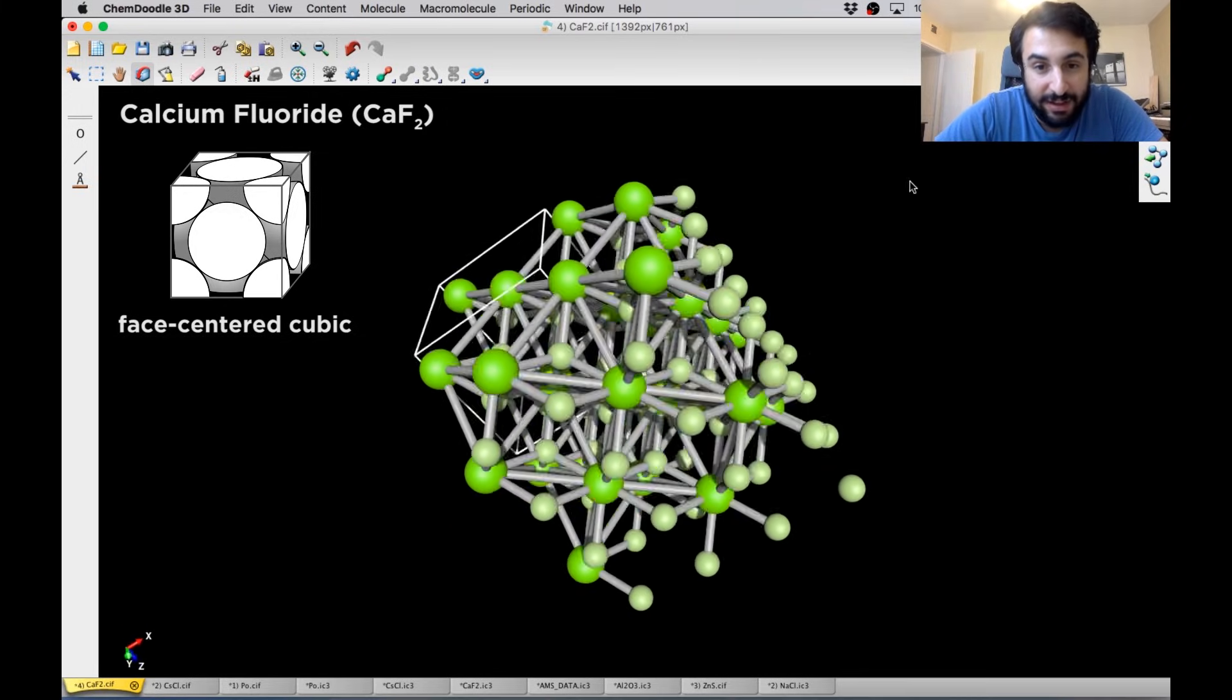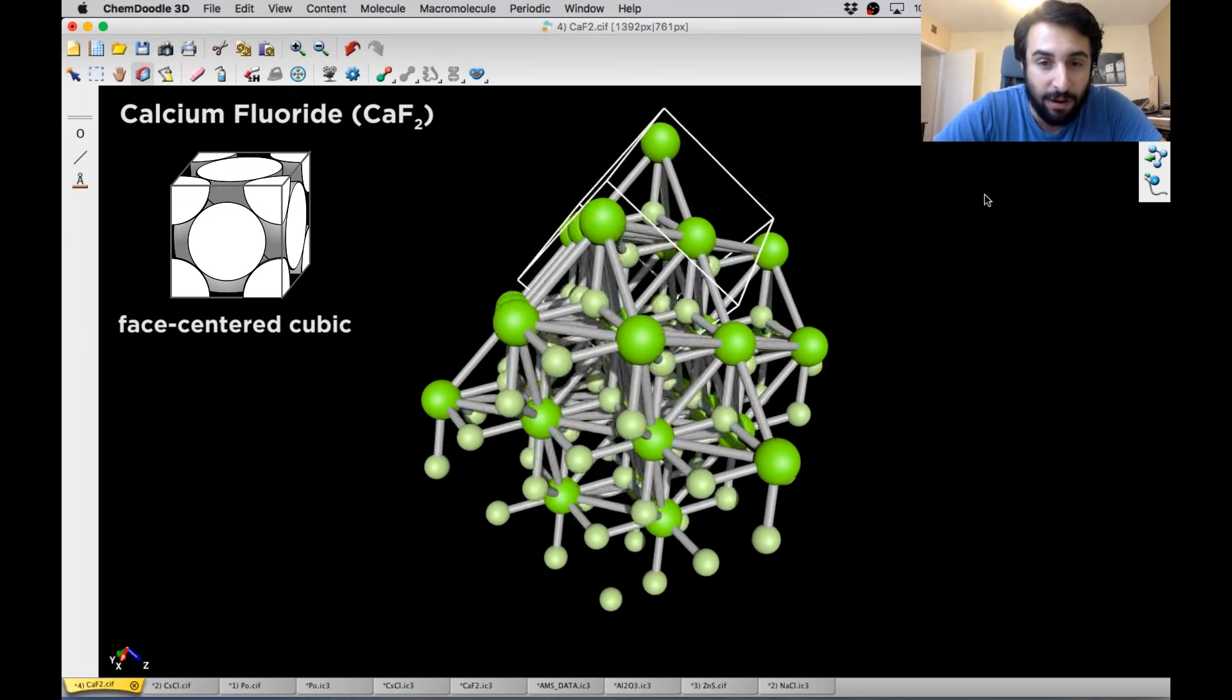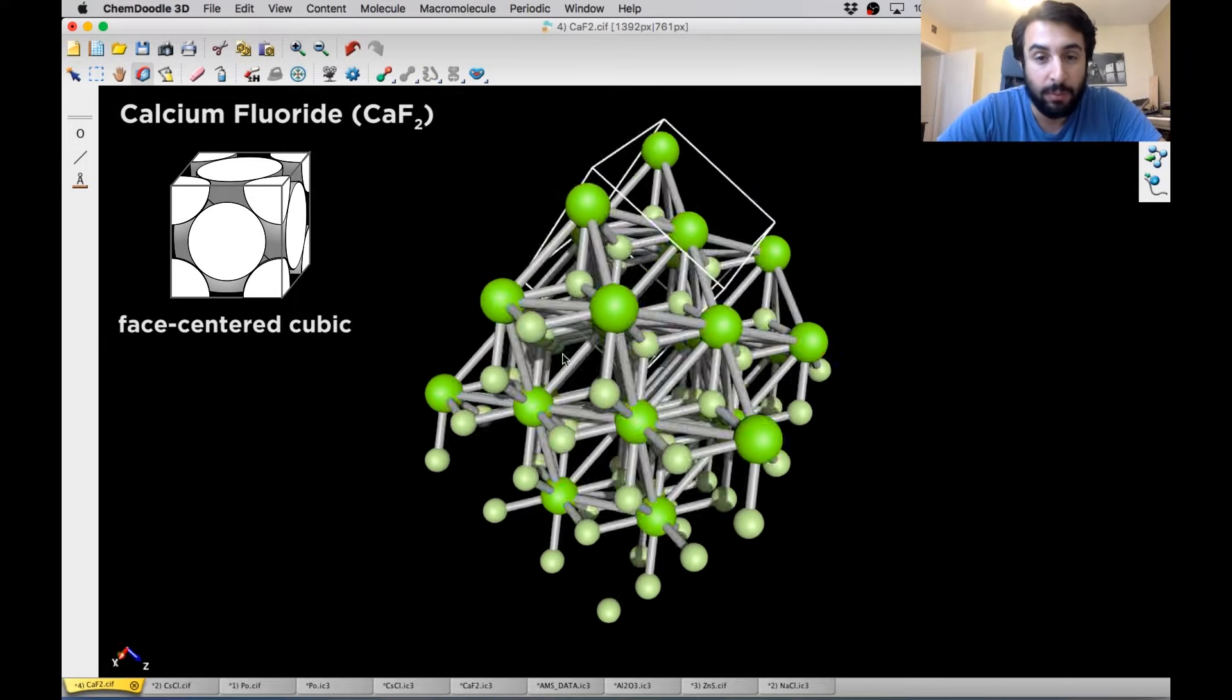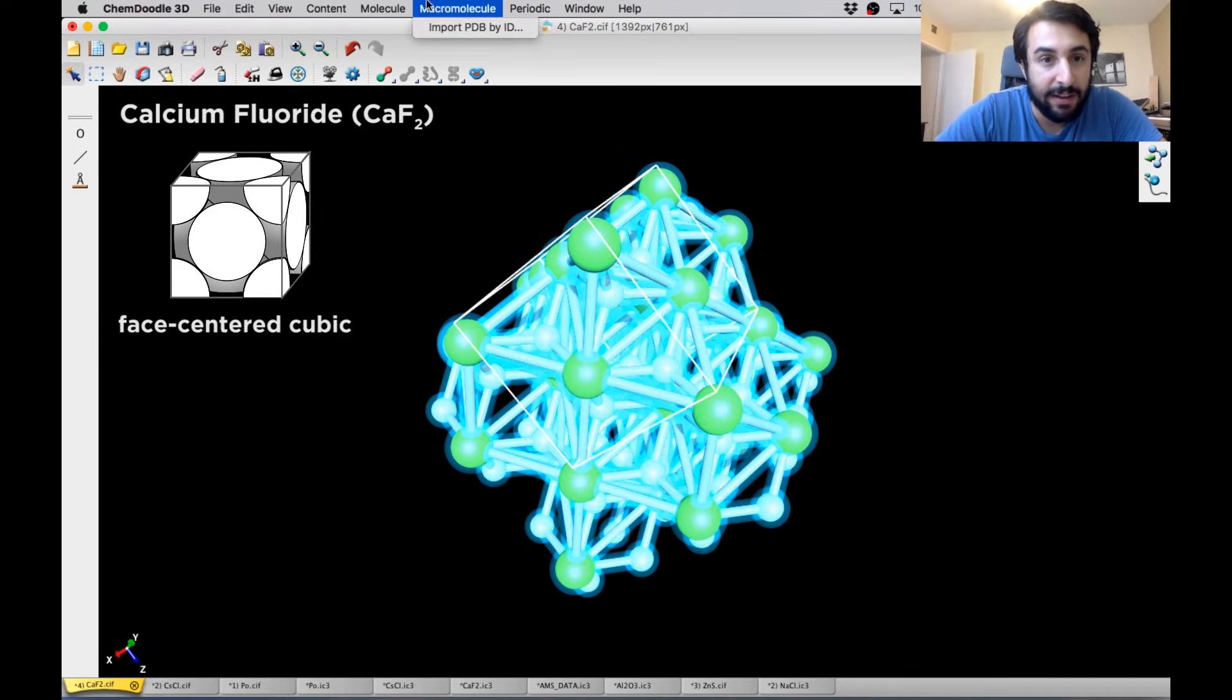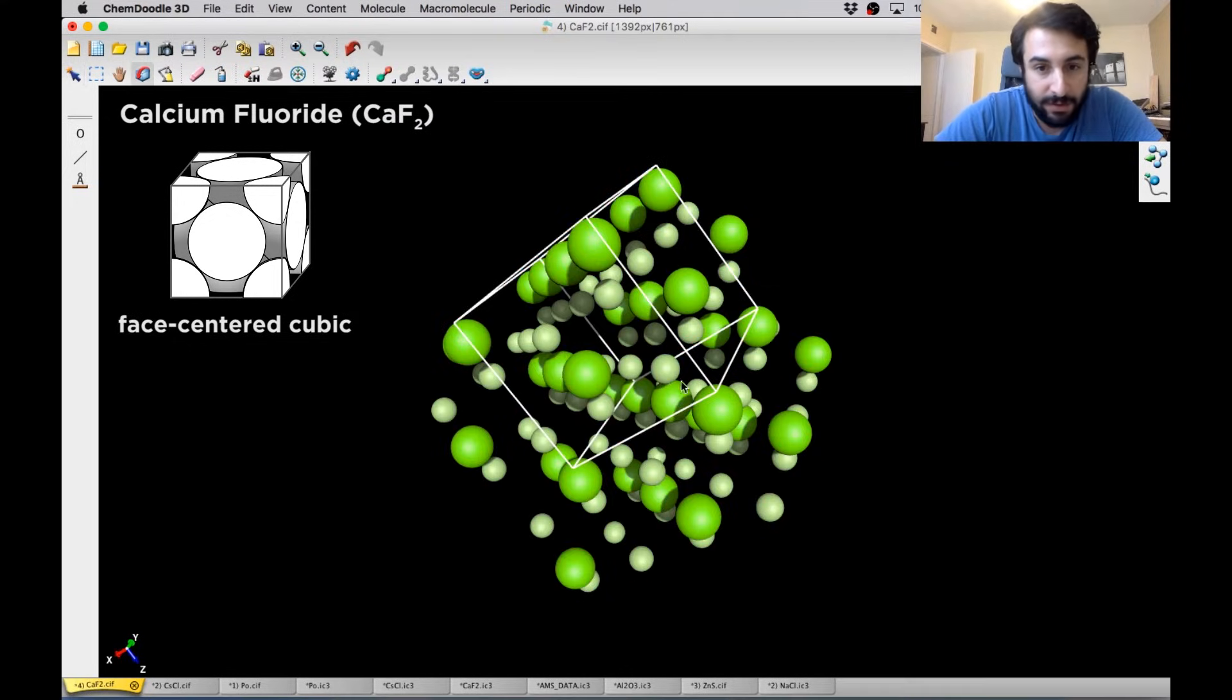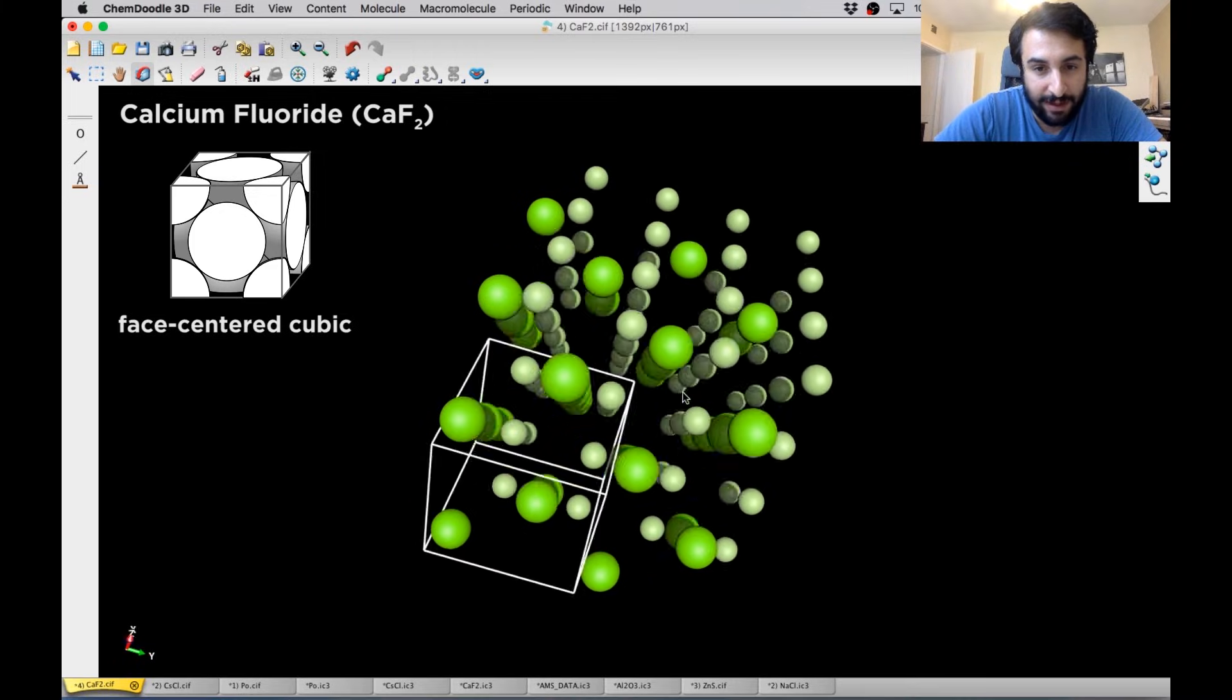And so this is obviously a more complex unit cell because we're not 1 to 1. This is not as simple as cesium chloride where we can just have repeating cubes. We do have to allow for the fluoride ions all to be making contacts with these calcium ions. And we can get rid of these bonds. Sometimes it's easier to just remove the bonds so we can get a better sense of how this looks. So that's this one, a little bit more complex.